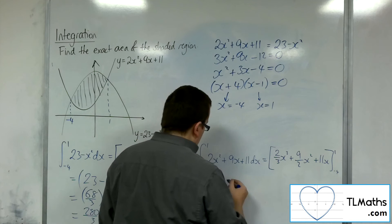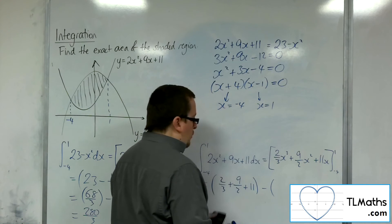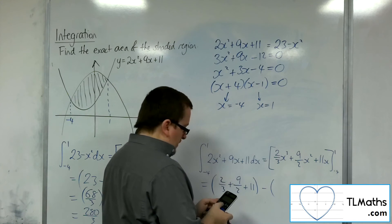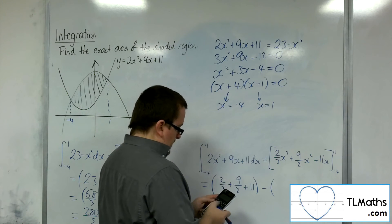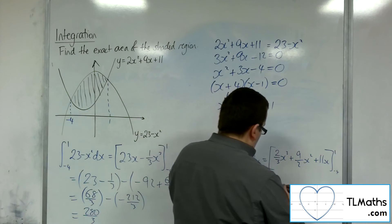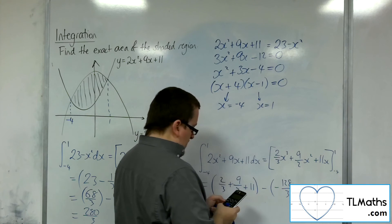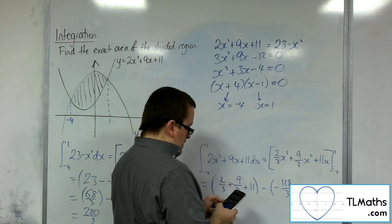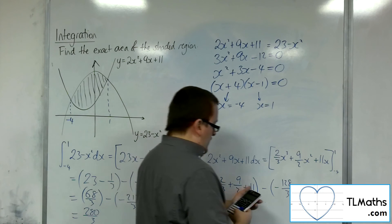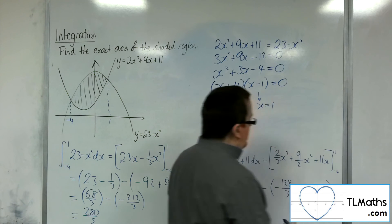So I'm going to substitute the 1 first, so 2 thirds plus 9 halves plus 11. Substitute in the minus 4, so 2 thirds times by minus 4 cubed, so minus 128 over 3. Then we've got 9 halves times by minus 4 squared, so 72. And then we're going to have to take away 44 on the end.